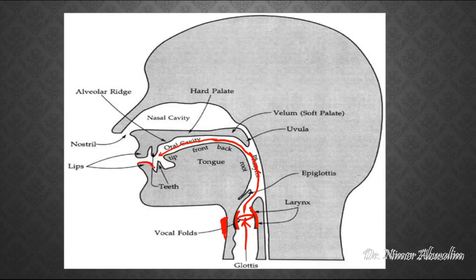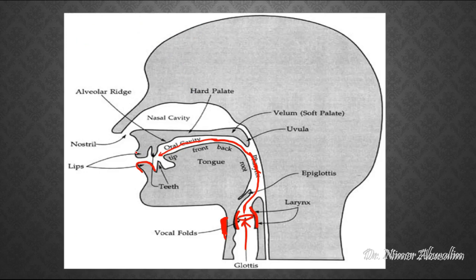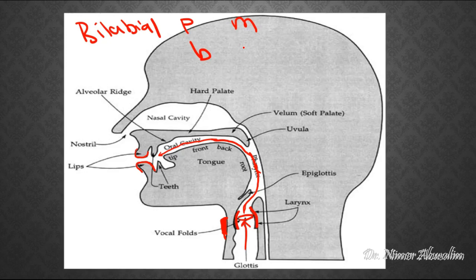Sometimes we can use our bottom lip and our top teeth and put them together to constrict the airflow. In this case, we come up with sounds called labiodental — 'labio' from lips, 'dental' from teeth. The only labiodental sounds in English are F and V. The last place where the air can be modified is between both lips. These sounds are called bilabial sounds. Bilabial sounds in English are P, B, M, and the ones where the lips are rounded to produce them, like W.